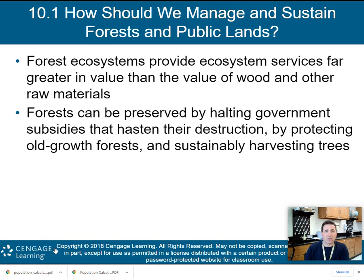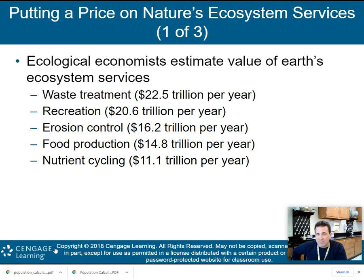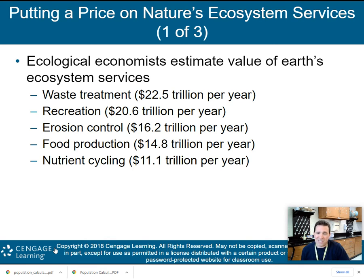Forests can be preserved by halting government subsidies that hasten their destruction, by protecting old-growth forests, and by sustainably harvesting trees. This slide shows the estimated monetary values of Earth's ecosystem services. Waste treatment is worth over $22 trillion per year. Recreation is over $20 trillion. Erosion control — such as what trees along rivers provide — is $16 trillion a year. Food production is $14 trillion a year, and nutrient cycling is over $11 trillion per year.